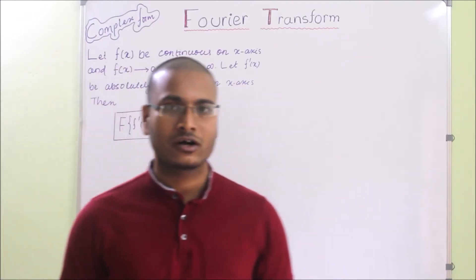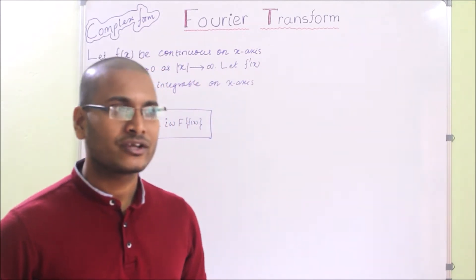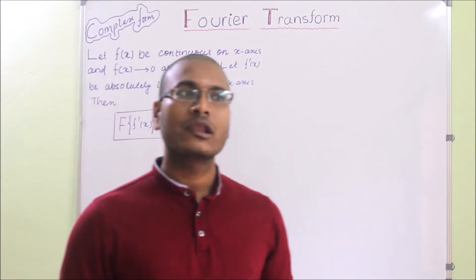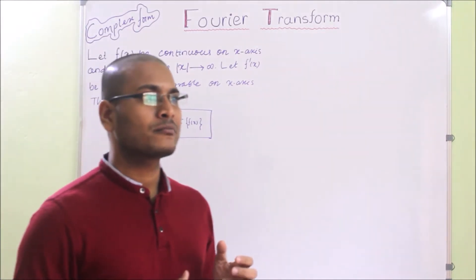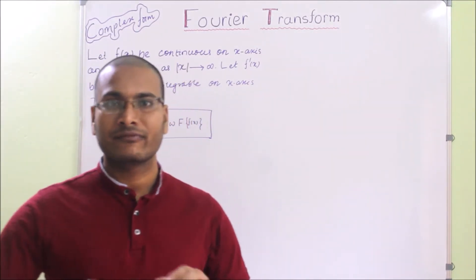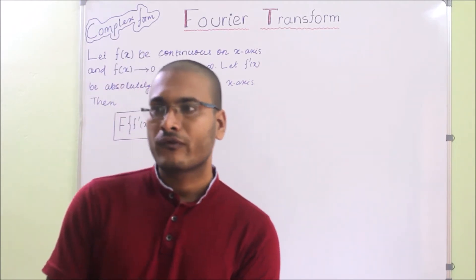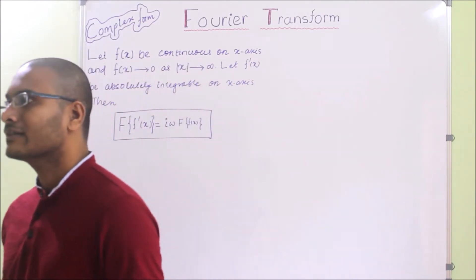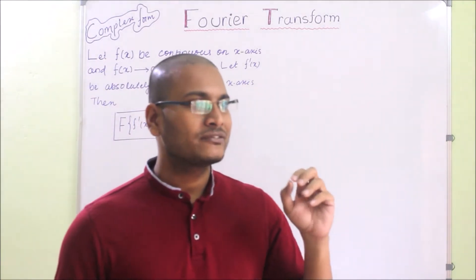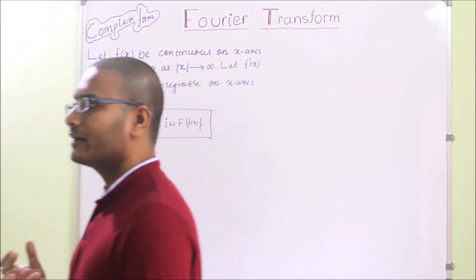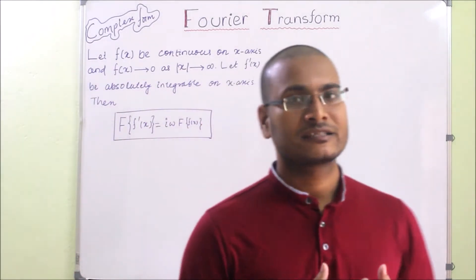Welcome to another lecture on Fourier transform. Today we will see a very interesting property — a formula for how to find the Fourier transform of the derivative of a function. That is, if f(x) or f(t) is given, how to find the Fourier transform of f'(x) or f'(t). This formula is very useful and its applications are found in many engineering, mathematics, and science problems.